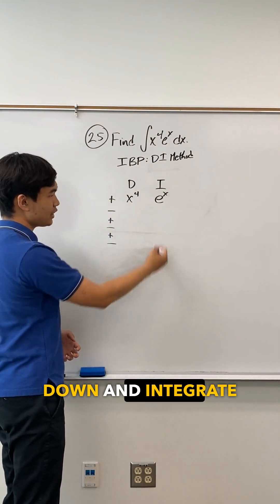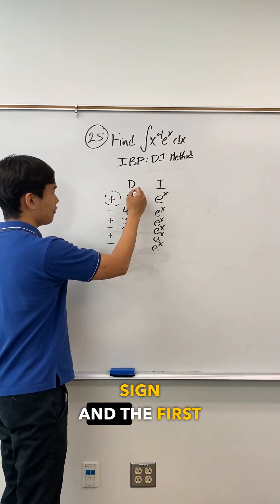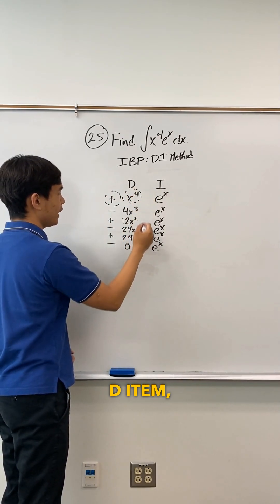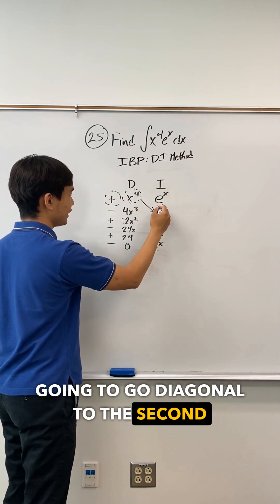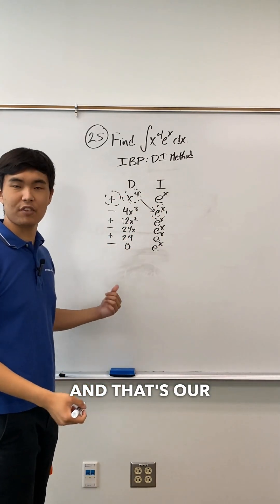Now we just differentiate down and integrate down. Now what we're going to do is we're going to take the first sign and the first D item, and then we're going to go diagonal to the second I item. We're going to multiply all of these together, and that's our first term of our answer.